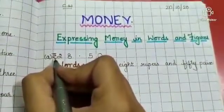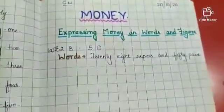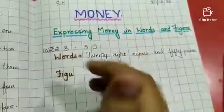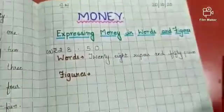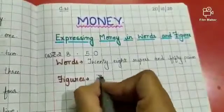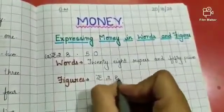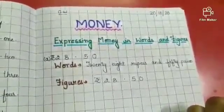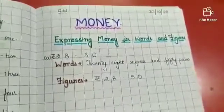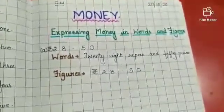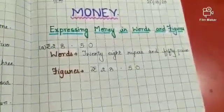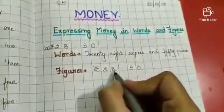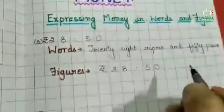In figures, we write it as Rs. 28.50. This dot is used for the word 'and', like 28 rupees and 50 paise.